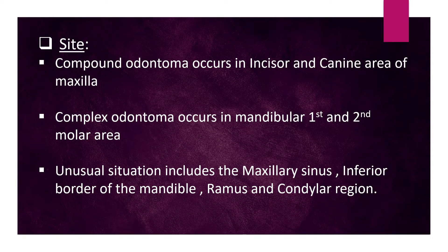Site: Compound odontoma occurs in the incisor and canine area of the maxilla. Complex odontoma occurs in the mandibular first and second molar area. Unusual situations include the maxillary sinus, inferior border of the mandible, ramus, and condylar region.